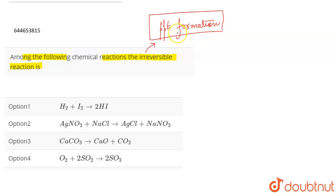So this is a common technique to remember such questions. If you talk about the first option, it says that H₂ + I₂ → HI. Now this is a reversible reaction; this can be reversed.